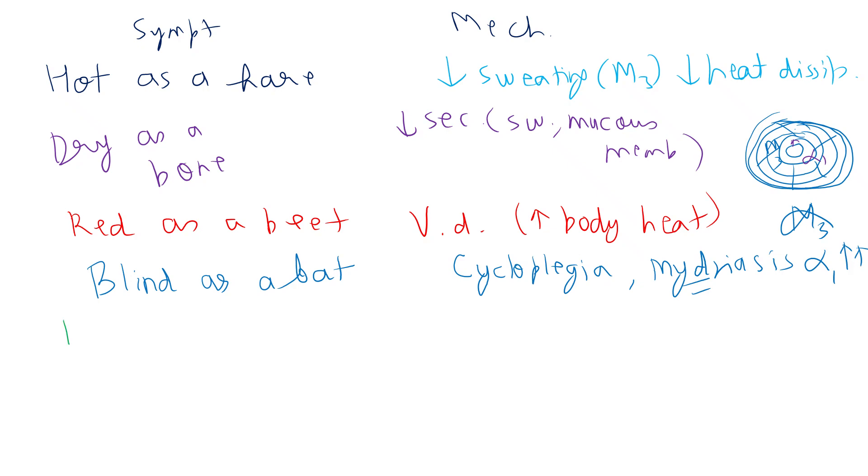Mad as a hatter - altered mental status. Remember that famous film Alice in Wonderland. It permeates the blood brain barrier and affects CNS pathways, causing altered mental status.